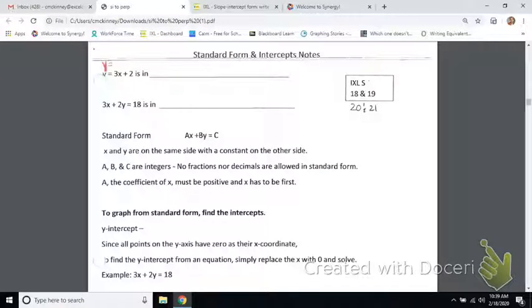Alright, so looking at these notes, this first equation with my ill-placed circle should say y equals 3x plus 2, and that is in what form? Slope intercept form.